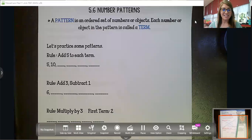Hey guys, okay, last lesson of chapter five and it's not a hard one either. Today we're talking about number patterns. A pattern is an ordered set of numbers or objects and each number or object in that pattern is called a term. So the whole thing is called a pattern, each individual number or object is the term.